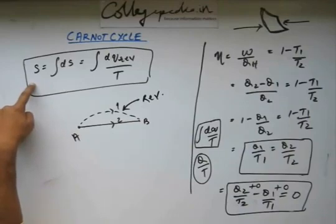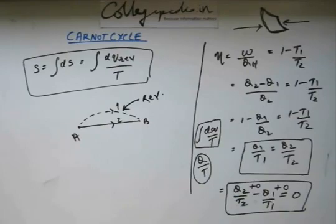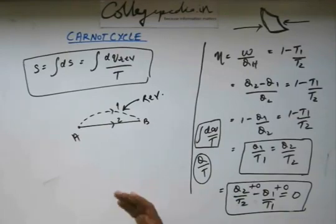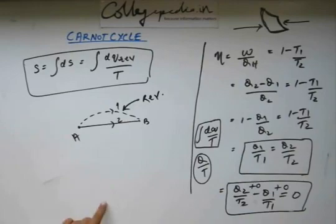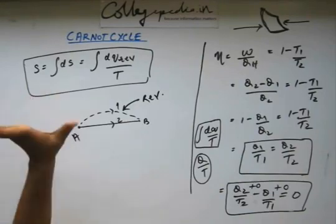This is how people came to know that there is a quantity Q by T which is a state function. Clausius named it entropy, and we define entropy as dS equals dQ reversible by T. When we solve problems, this will become more clear.